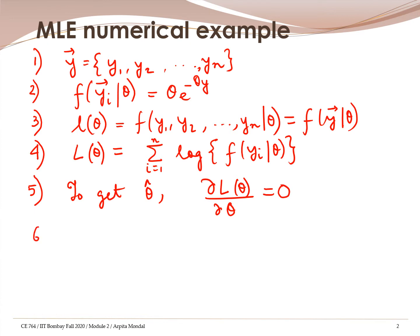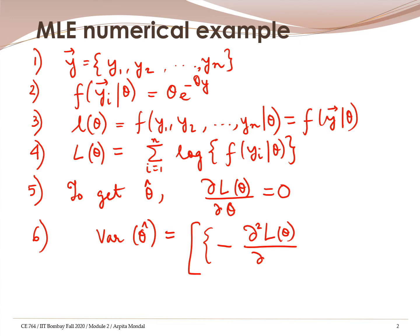The point estimate theta hat is not enough — we also need to report the standard error, from which we can derive confidence intervals. To get the standard error, we need the variance of this estimator. We had seen that this is equal to the negative of the second-order derivative — the inverse of that — evaluated at theta equal to theta hat.